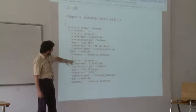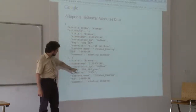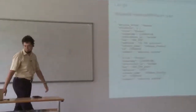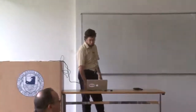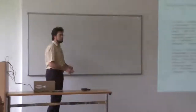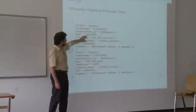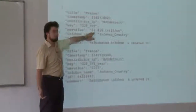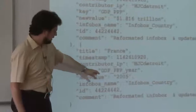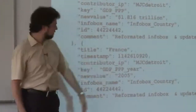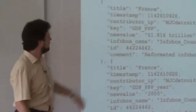At the same timestamp in the same revision, they also added the year for which that GDP value or estimate is valid. And if you go further down in the list of changes for France, you will find that the GDP of France with the same attribute key has increased to 1.8 trillion, the year in which this value applies is 2005, and it was a different user who changed it.